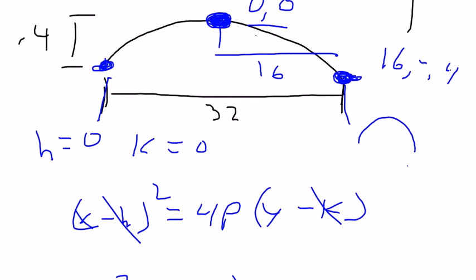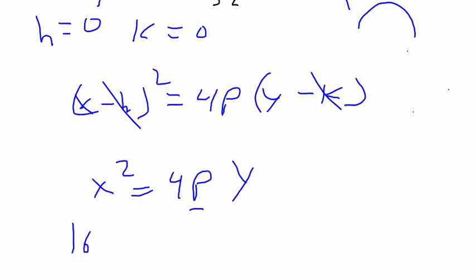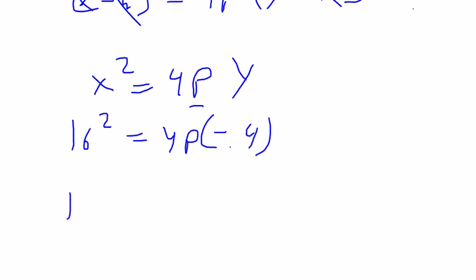So I can substitute that in for x, 16 squared, 4p, negative 0.4. This would be 16 squared equals negative 1.6p. If I divide those, 16 squared divided by 1.6, I get 160.